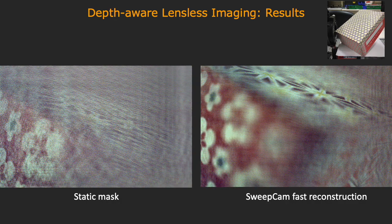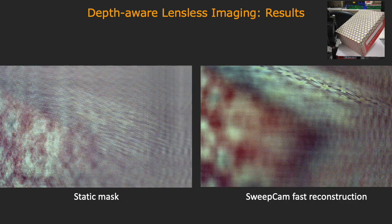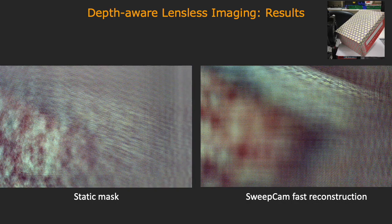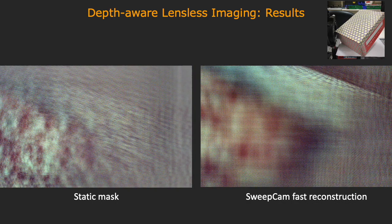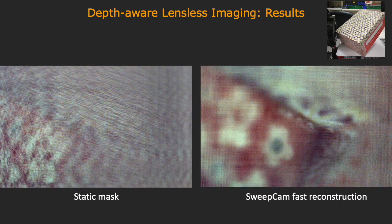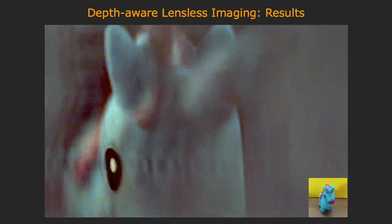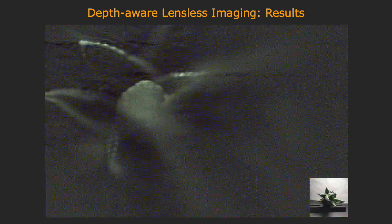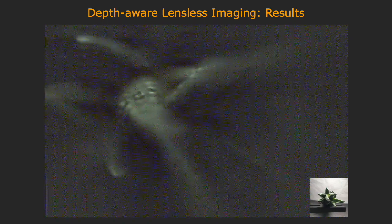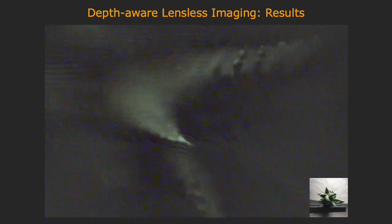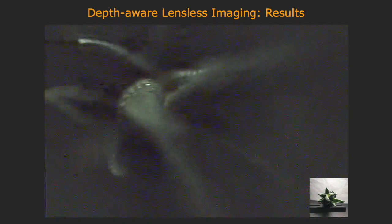Here is another scene where a corner of a box is placed in front of the camera. Here is another scene of a small unicorn toy very close to the camera. Here is another scene of a succulent plant — note the white spots on the plant come into and fade out of focus as the focus moves.